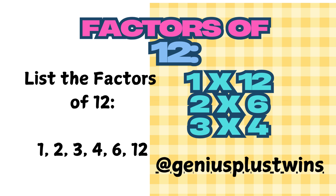When I list the factors, I want to do so from least to greatest, always starting with 1. The factors of 12 are: 1, 2, 3, 4, 6, and 12. Once again, don't forget that every number has at least 2 factors — 1 and itself.